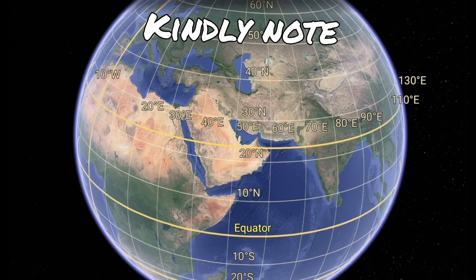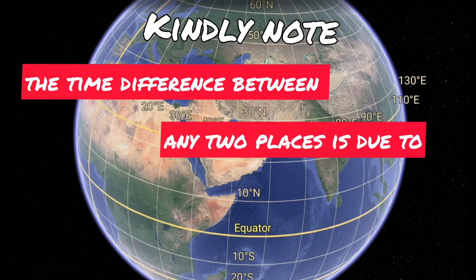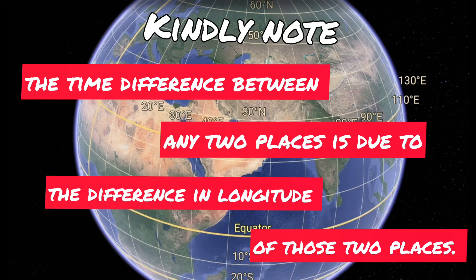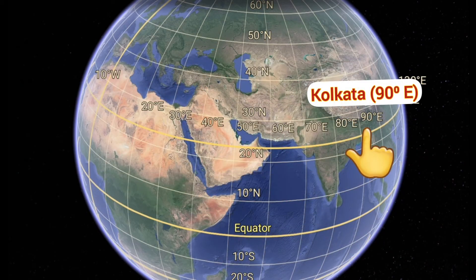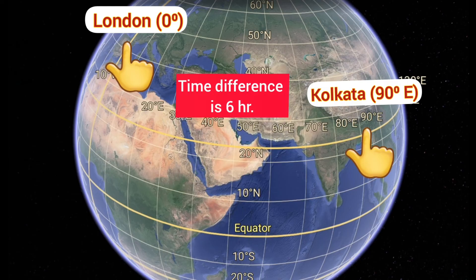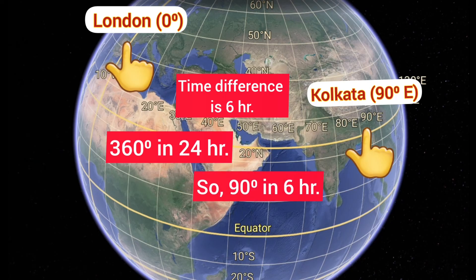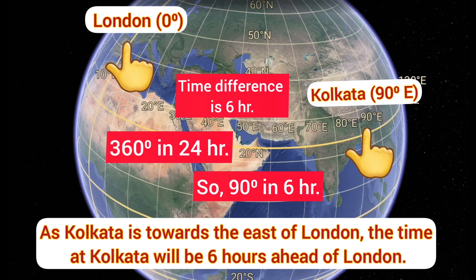You must note that the time difference between any two places is due to the difference in their longitude. For example, Kolkata is located at 90 degrees east longitude and London is at zero degrees longitude. The time difference between Kolkata and London is six hours, based on the fact that 360 degrees are covered in 24 hours and 90 degrees in six hours. As Kolkata is towards the east of London, the time at Kolkata will be six hours ahead of London.